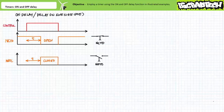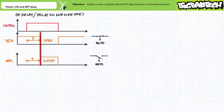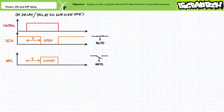Recall that a timing diagram of a timer executing the on delay, or delay on energized function, would look like this. When the controlling input is energized, the associated contacts do not instantaneously switch to their opposite state. Only after the predetermined delay period T has elapsed do the contacts change states. When the controlling input is de-energized, the contacts quasi-instantaneously revert to their normal deactivated state. The on delay timer could be used to turn another motor on a measurable time period after another has started.